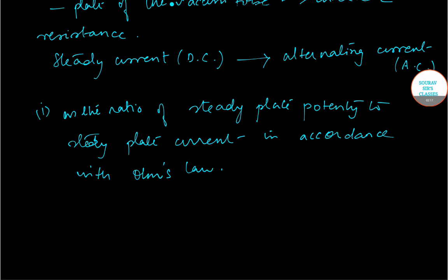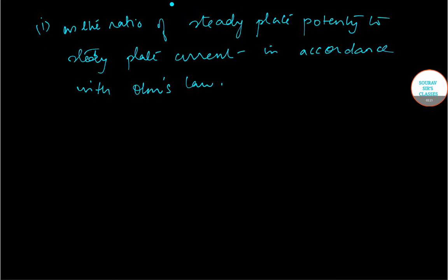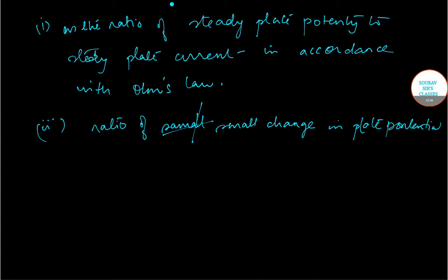Now we talk about the dynamic or AC plate resistance. This is defined as the ratio of small change in plate potential, given by delta EB, to the corresponding small change in plate current, given by delta IB.